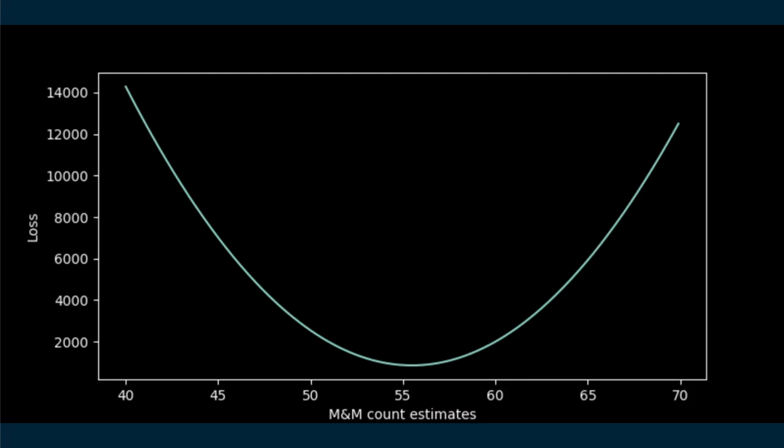With a little Python code, we can run an exhaustive search on this problem and calculate the loss function for a wide range of estimates. There are links to all the code for this below. Feel free to check it out. Then all we have to do is pick off the M&M count that corresponds to the lowest value on the loss curve, the least wrong option. In this case, about 55 and a half M&Ms.